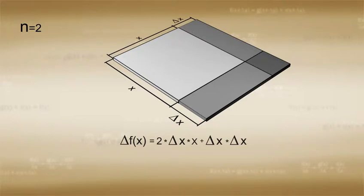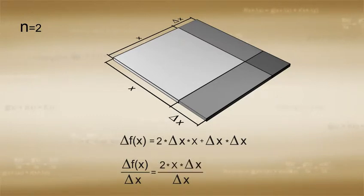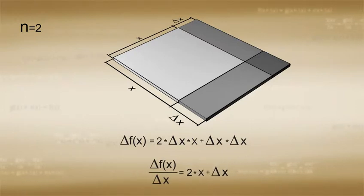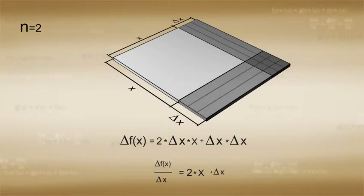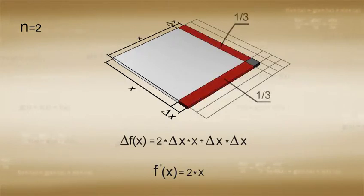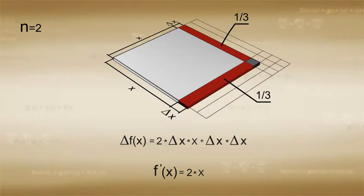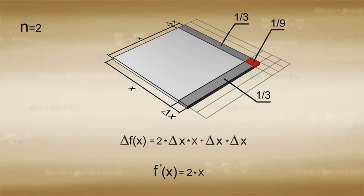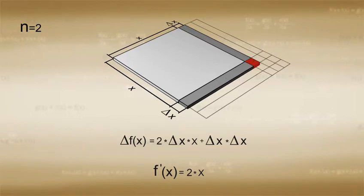This is equal to 2 times delta x times x plus delta x times delta x. If we divide both sides by delta x to get the rate of change, we get delta f(x) over delta x equal to 2x plus delta x. If we look at the value of this relationship as we make the delta x infinitesimally small, we get the derivative of f(x) equal to 2x. Notice that the two rectangles composed of only one side whose length was delta x stayed relevant, since their proportions were significant in comparison to the size of delta x, even as delta x became really small. On the other hand, the square composed of two sides whose length was delta x shrunk down in size faster than the other two rectangles as delta x became infinitesimally small, and for that reason it may be neglected.